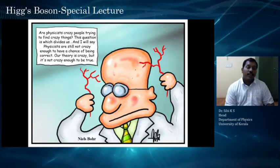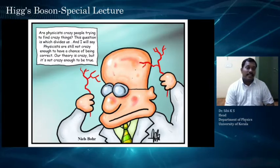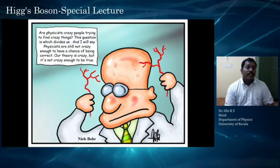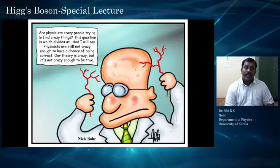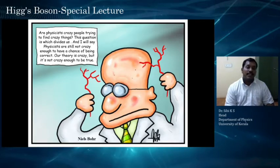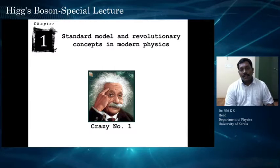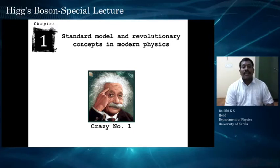People often ask: are physicists crazy people trying to find crazy things? I would like to quote Niels Bohr, who says that physicists are still not crazy enough to have a chance of being correct. He says that our theory is crazy, but it is not crazy enough to be true. Let me share some of the revolutionary concepts that made the standard model possible in modern physics.